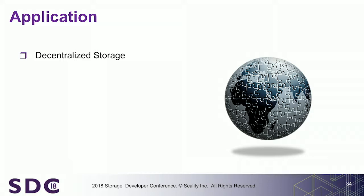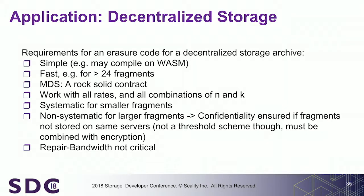What do we want to do? Decentralized storage. We want to build a system which is distributed across the planet, super simple with very minimal synchronization — compilable on WebAssembly. Fast for more than 24 fragments, ideally 50 or 100. MDS, because for us it's a contract. Rate-insensitive, because we may want to define more or fewer rates in different cases. Systematic for small fragments and non-systematic for larger fragments, because we are interested in the confidentiality aspect.